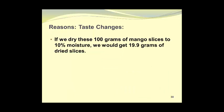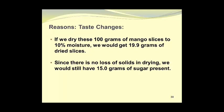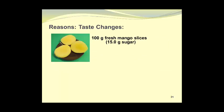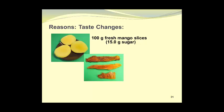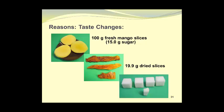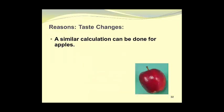If we dry these 100 grams of mango slices to 10% moisture, we would get 19.9 grams of dried slices. Since there is no loss of solids in drying, we would still have 15.0 grams of sugar present. So here are the 100 grams of fresh mango slices containing 15 grams of sugar — we dry those down, and we get 19.9 grams of dried mango slices. They will contain 15 grams of sugar, which is then representative of 75% of the weight of those 19.9 grams of dried mango slices.